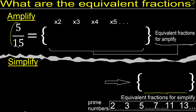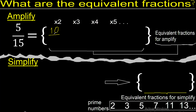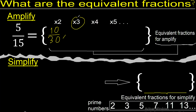First, multiply by 2: 5 times 2 is 10, 15 times 2 is 30. Now, multiply by 3.